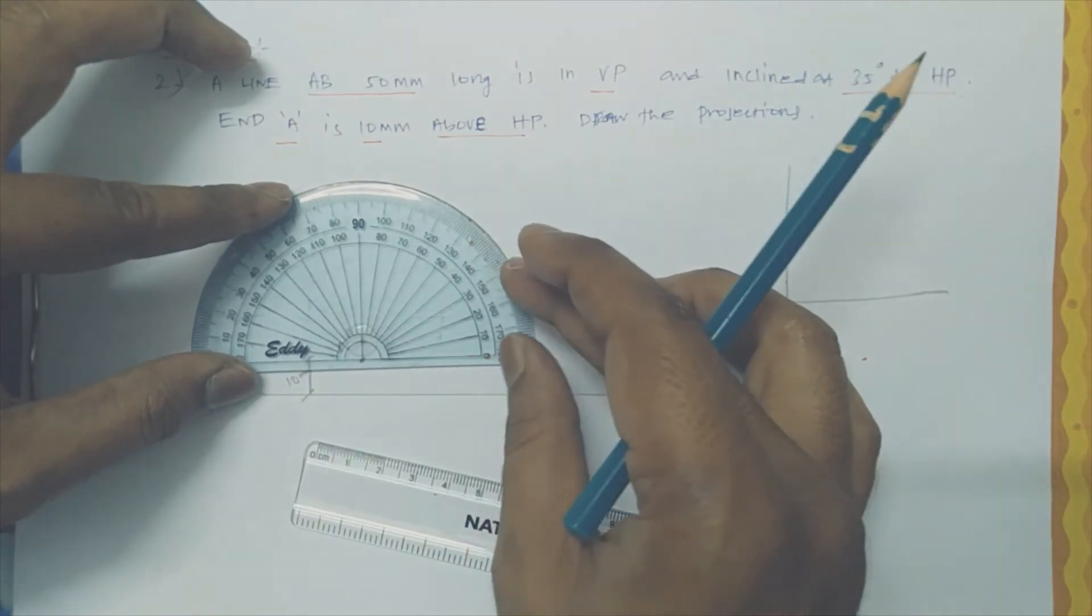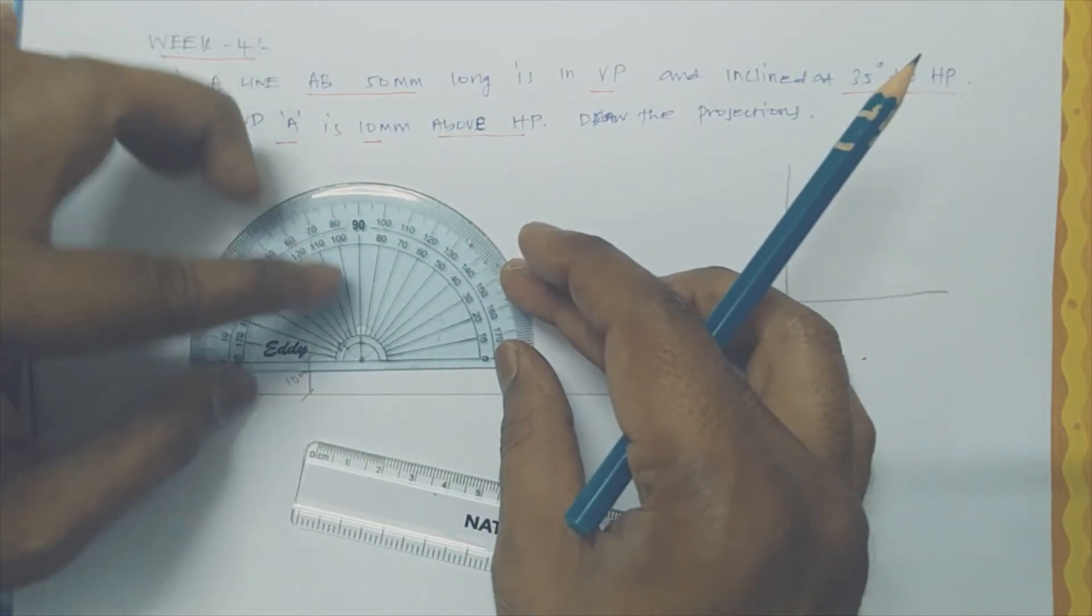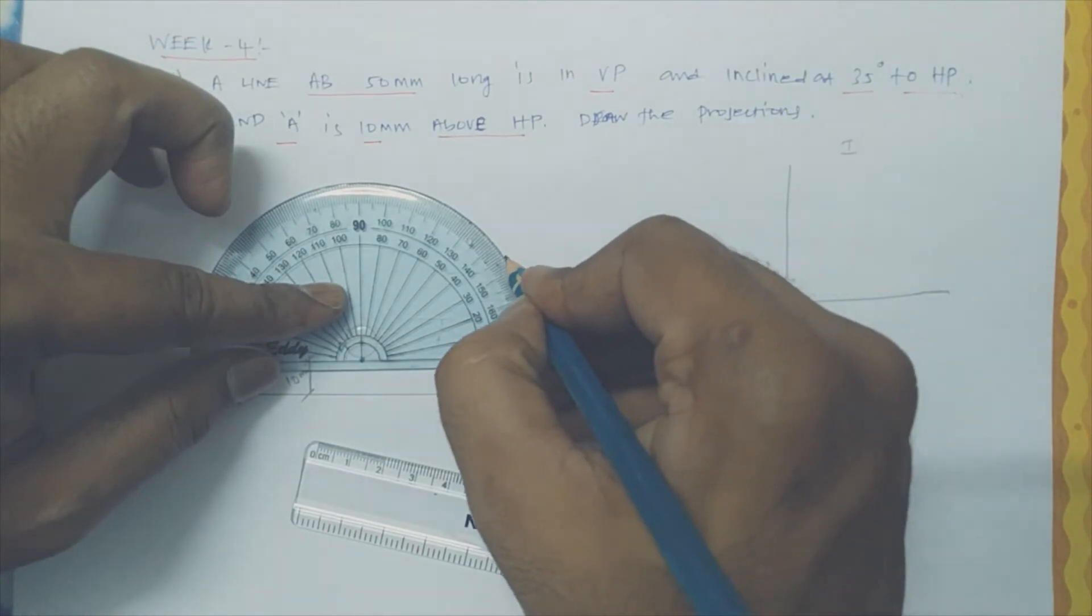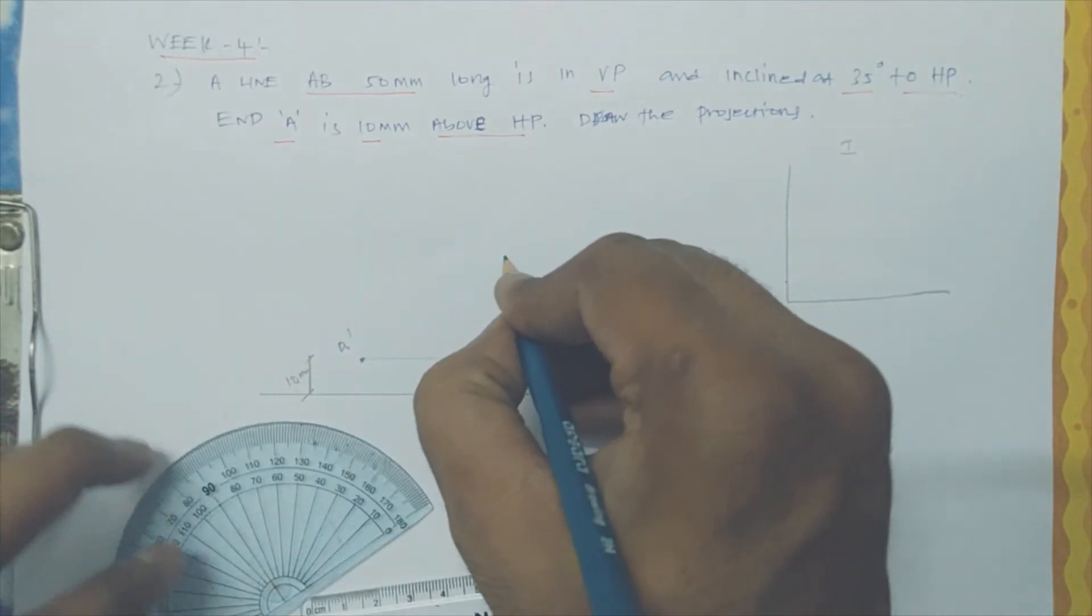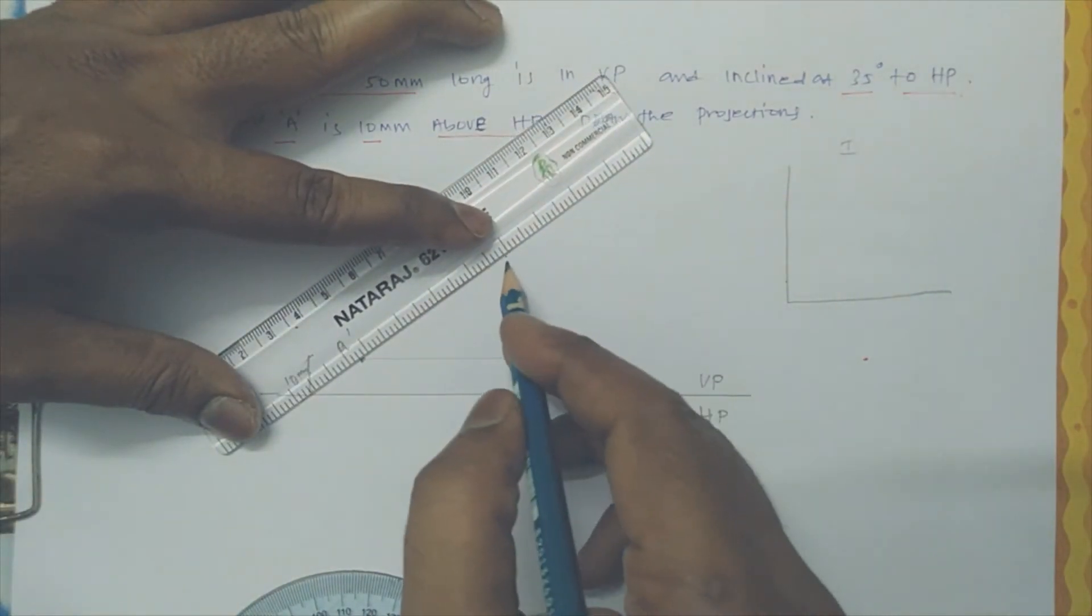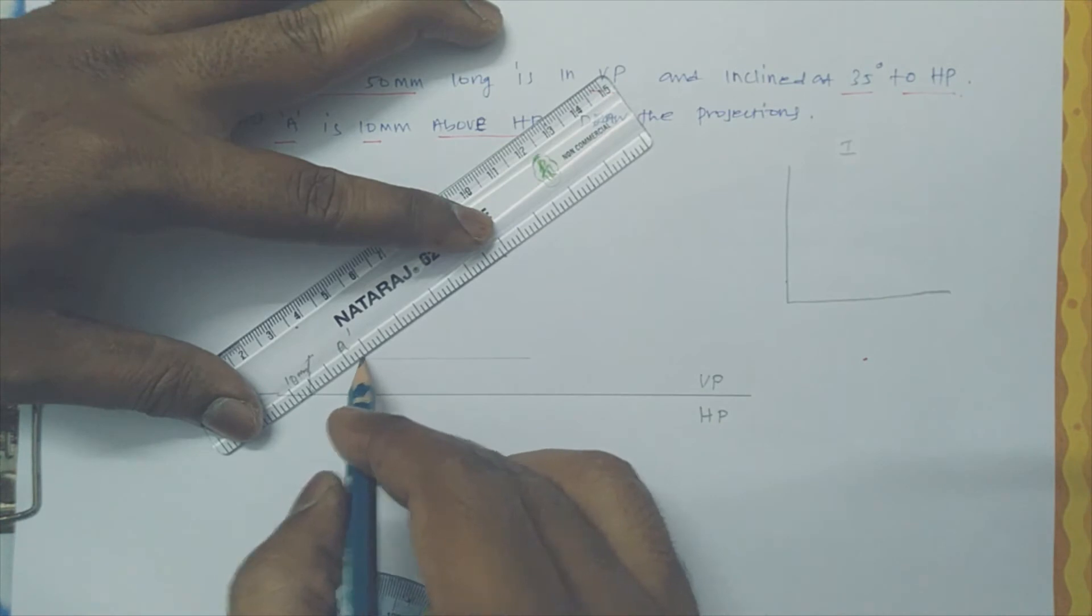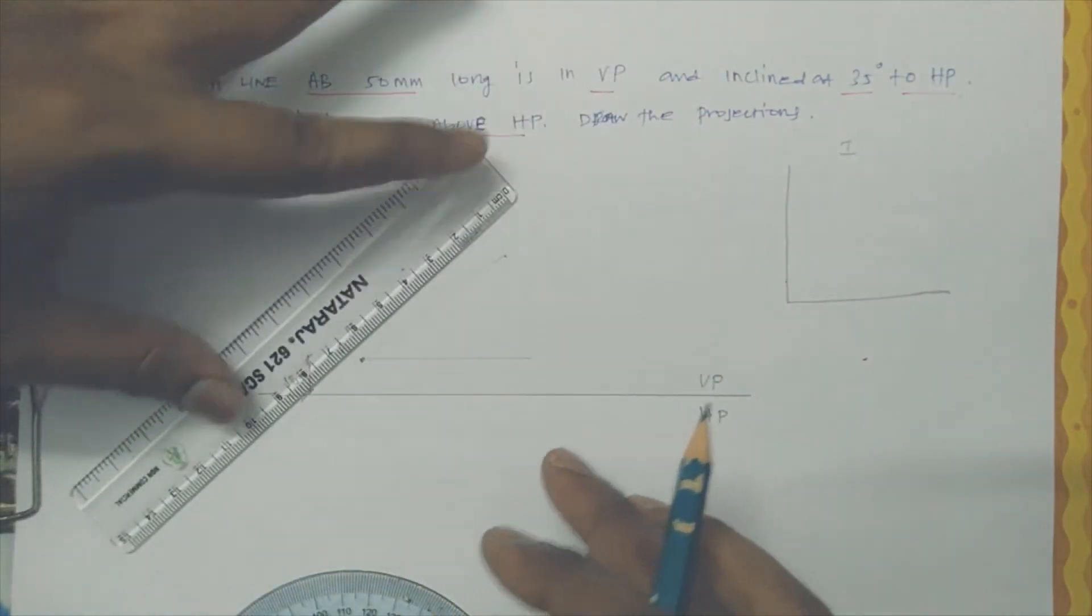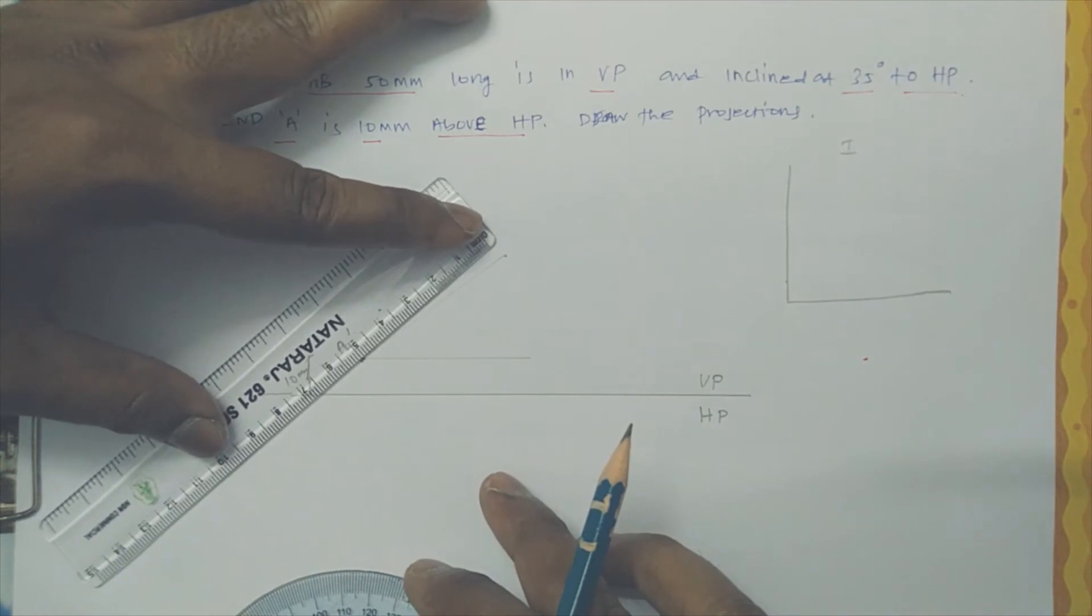Keep the protractor. Let me mark here 35. So this is a 35-degree line. Let me make it in very thin manner. So this length of the line is 50mm.